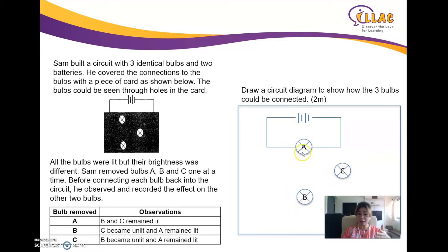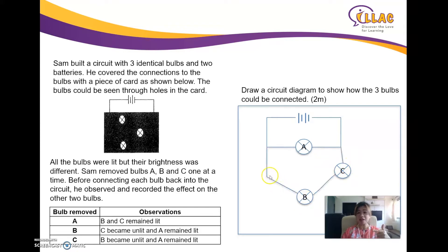A remains lit because it is a parallel, independent closed circuit by itself. And if C is removed, B becomes unlit — same reasoning, confirming B and C are connected in series with each other. So the circuit has A in parallel, and B and C in series together in another parallel branch.